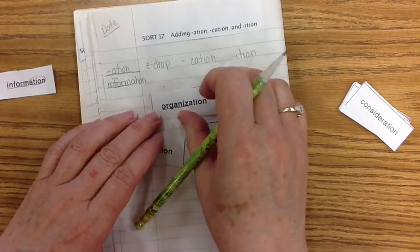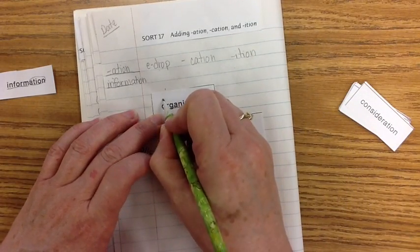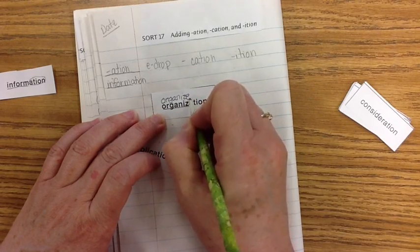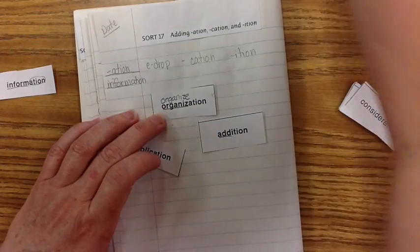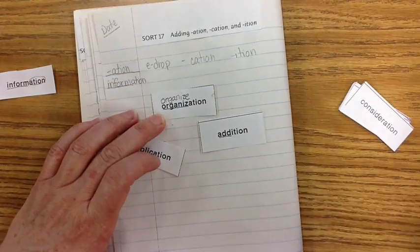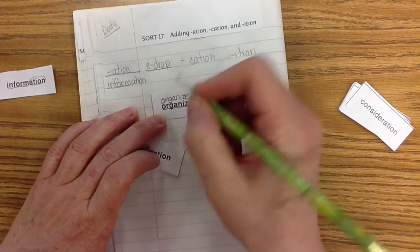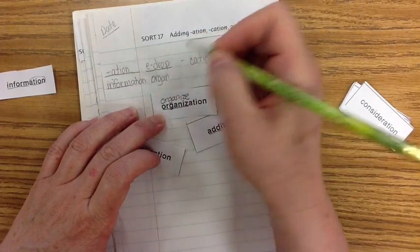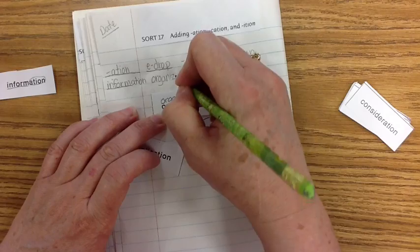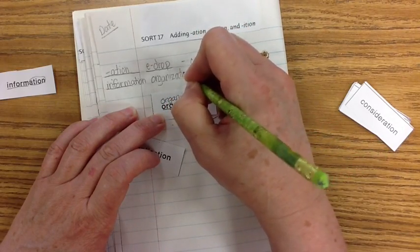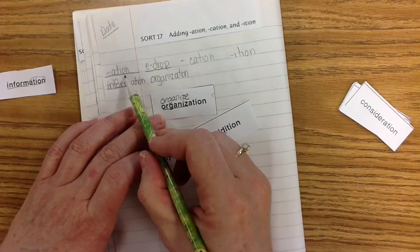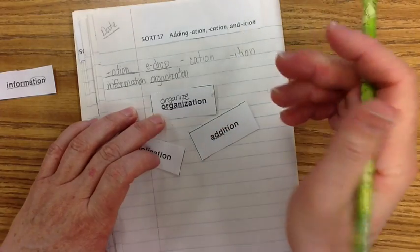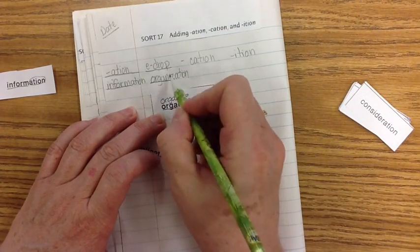Now let's look at organization. Organize. If we spell organize, we actually spell it O-R-G-A-N-I-Z-E. So organization is an E drop. We're going to put that up here. Let's put O-R-G-A-N-I-Z. We drop the E and add A-T-I-O-N. This has the A-T-I-O-N, but here is organize, and we just drop the E off of that.